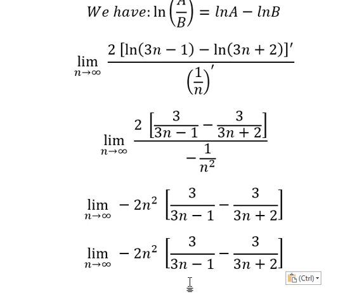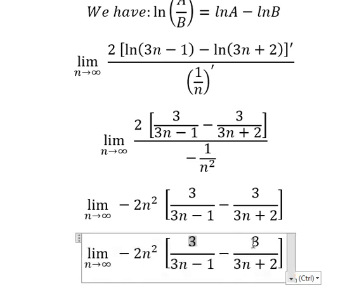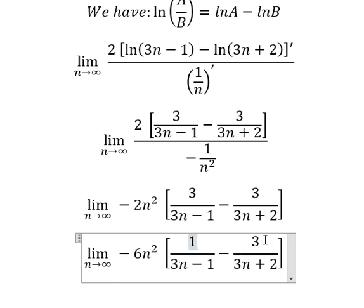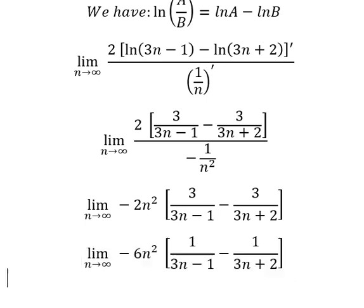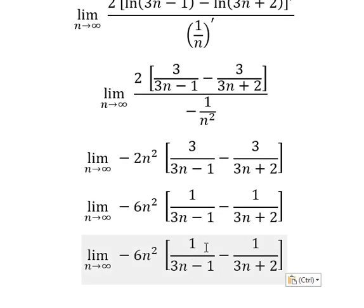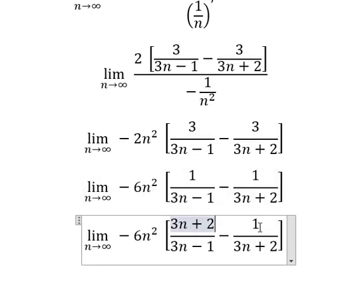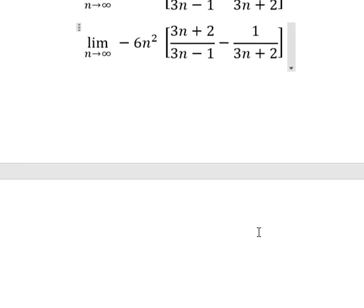Now we can do common denominator. I will put number three and number three go outside, and that is about number three and number two — we have number six. So we can do common denominator: this one will multiply by three and plus number two. This one is about three and minus number one.